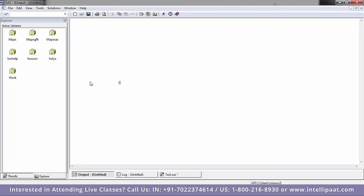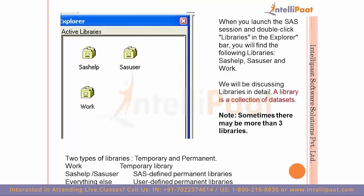If you want to save to any other library, you must mention the library name. The types of libraries are: work library (temporary), SAS help and SAS user (SAS-defined permanent libraries), and any library you create yourself (user-defined permanent libraries). A library is nothing but the collection of data sets or a reference to the location where you save your data sets.